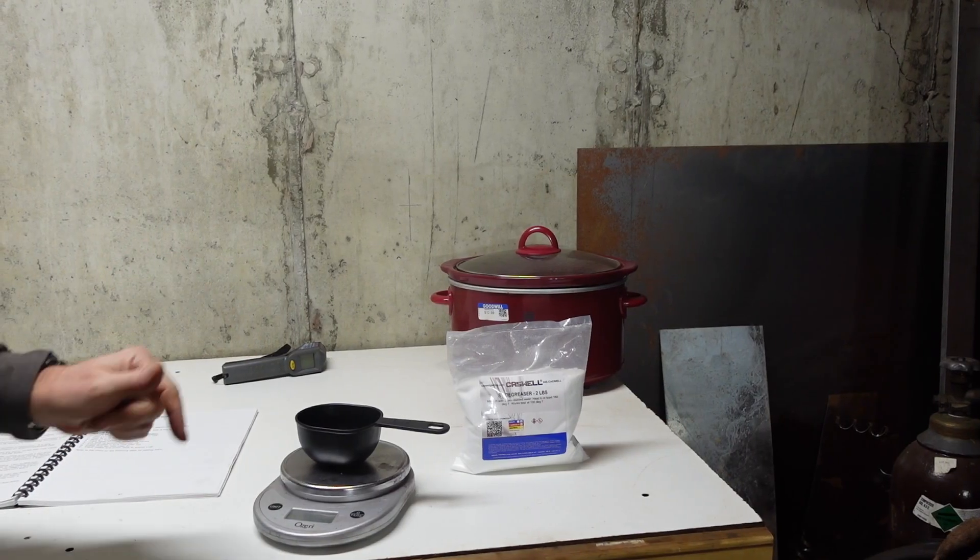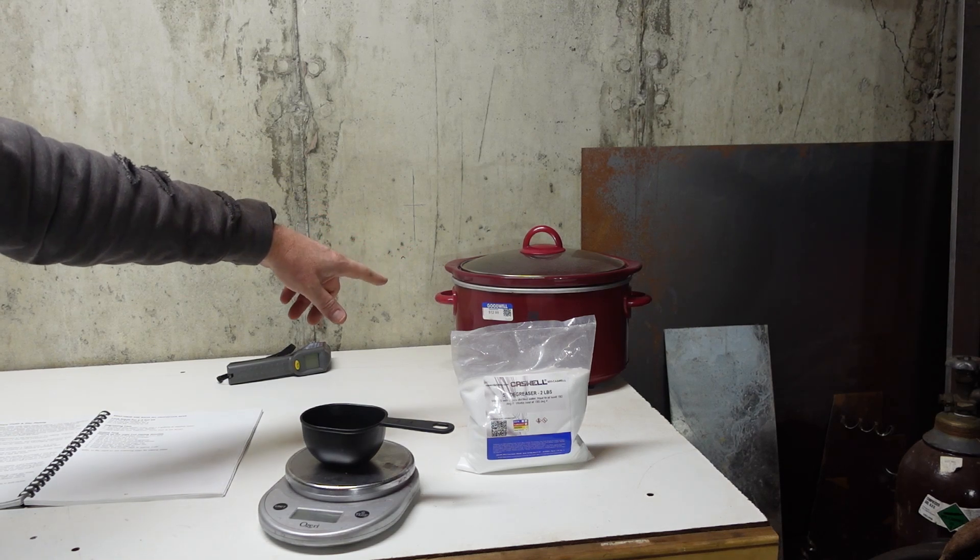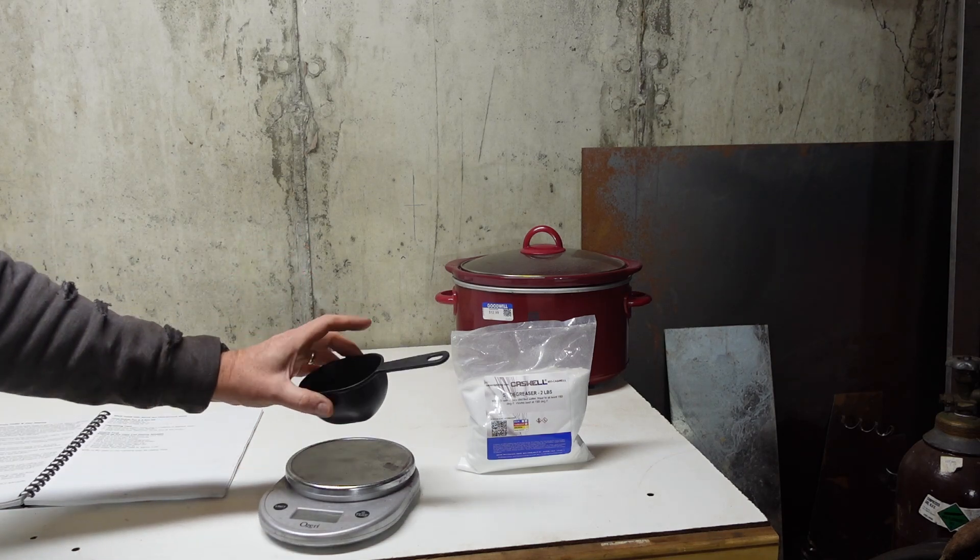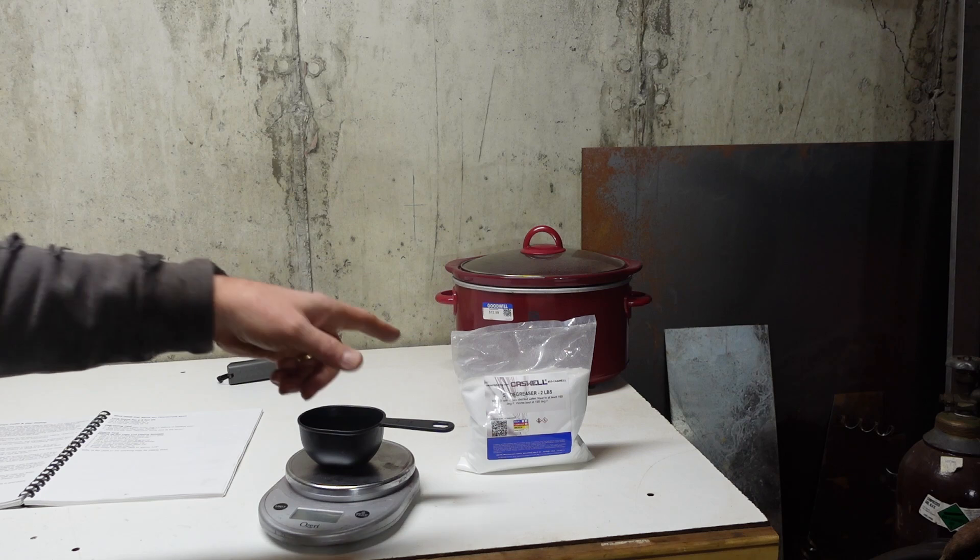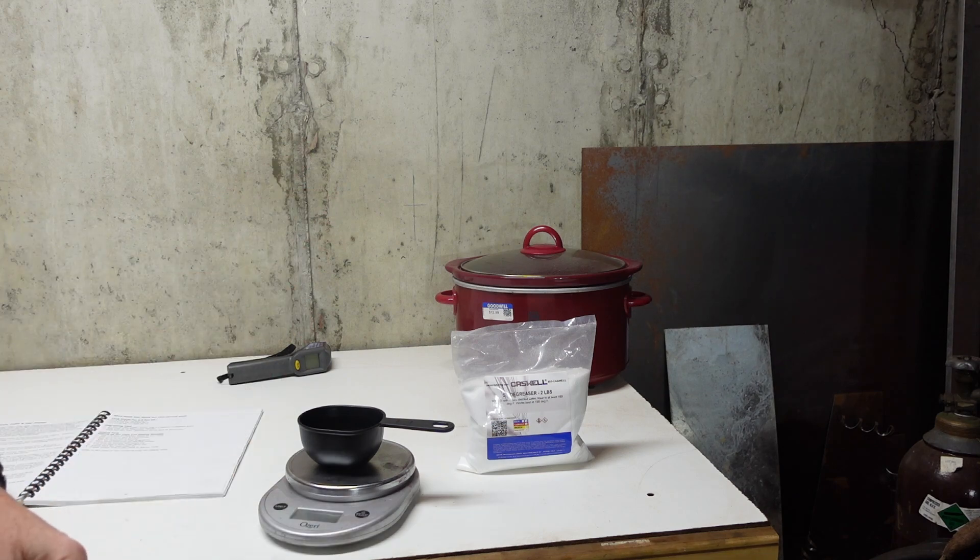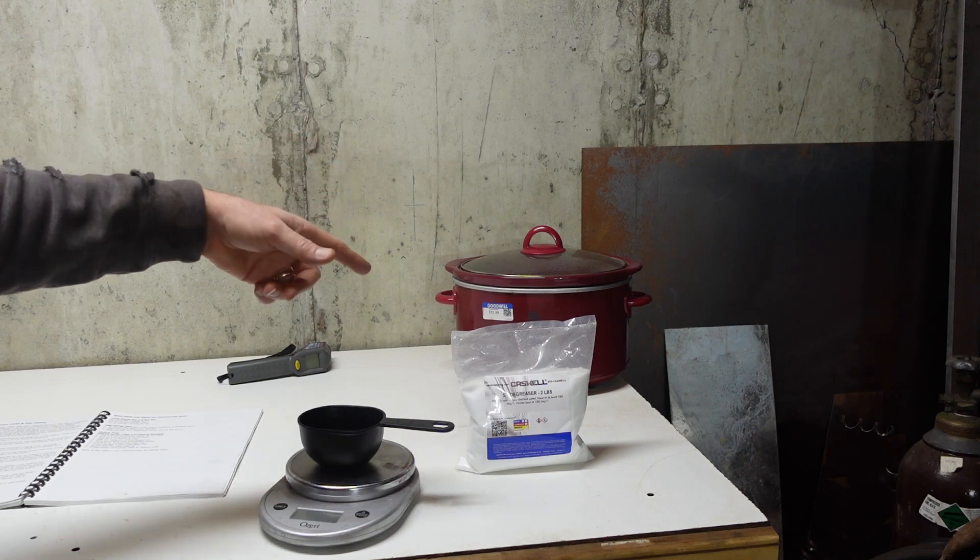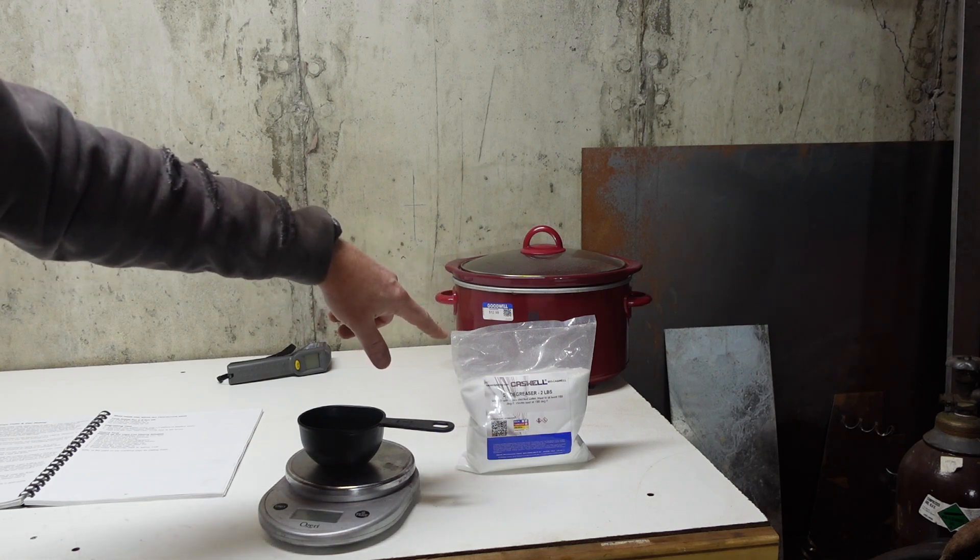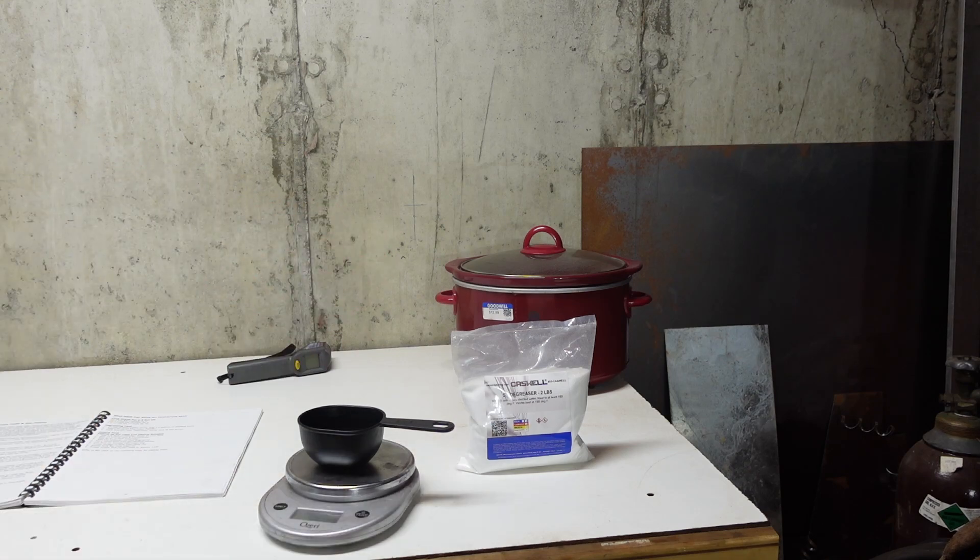First thing we're going to prep here is the degreaser. I got a little crock pot in the background there that I picked up from Goodwill for just a couple bucks. And I've got a scale here and I picked up some cheapo measuring cups from Walmart. This degreaser works best at 190 degrees, and you got to heat at least to 160 degrees. So I preheated the water a little bit with an immersion bucket heater.